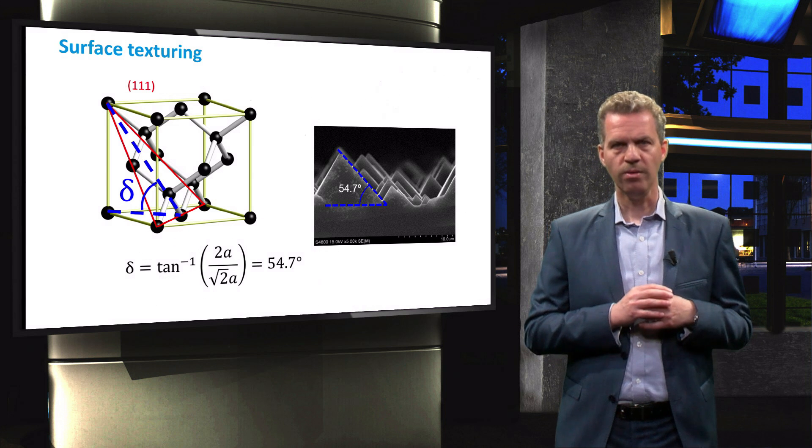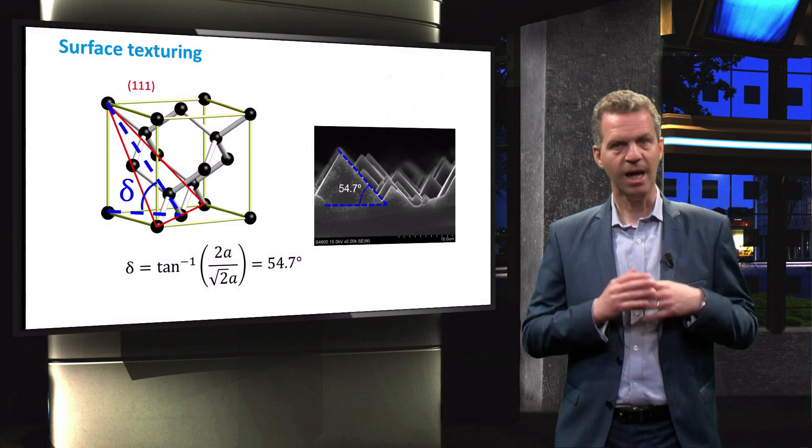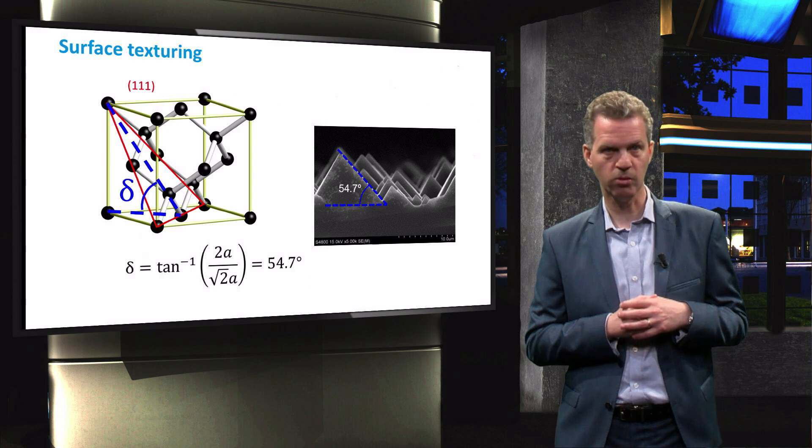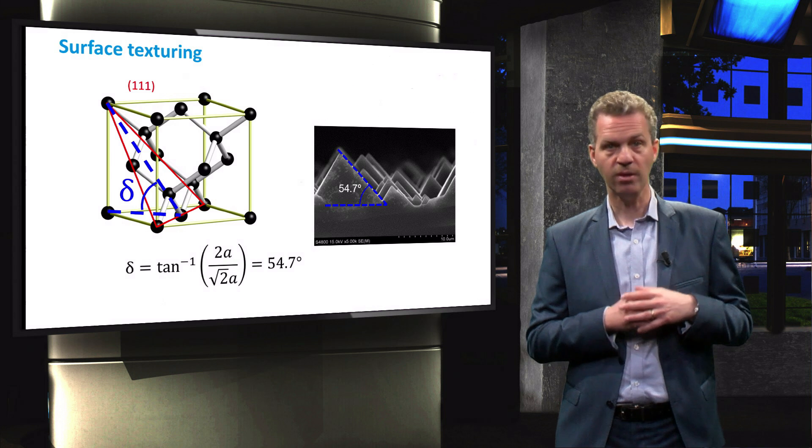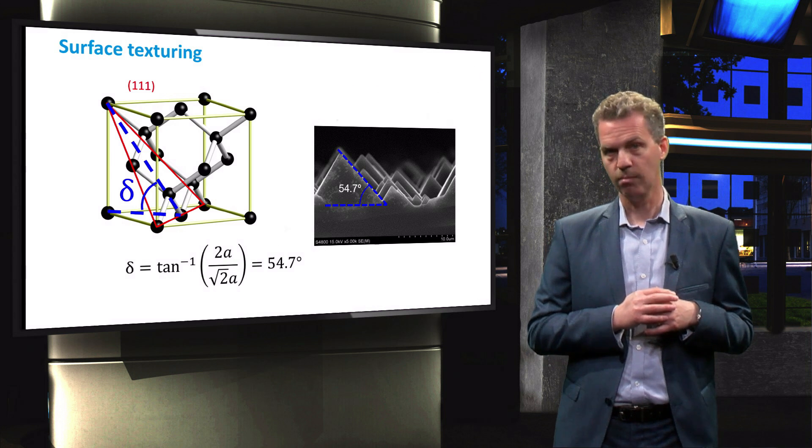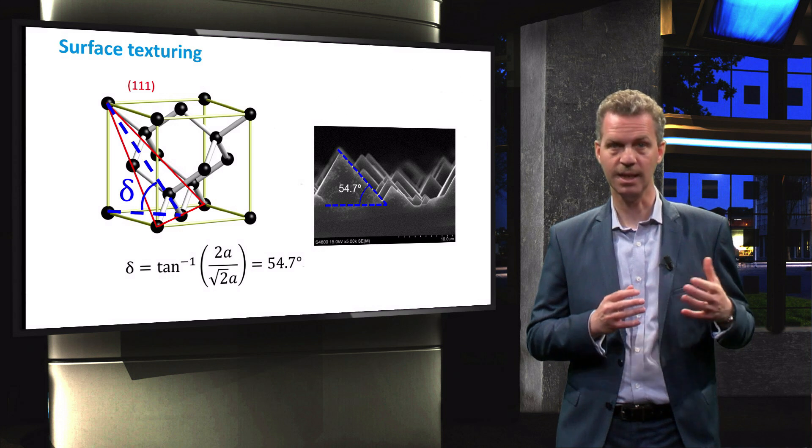When a 1 0 0 oriented wafer is placed in the etching solution, eventually only the 1 1 1 surface will be exposed to the etching solution and this results in a pyramidal texture that can be seen in this image taken by a scanning electron microscope.